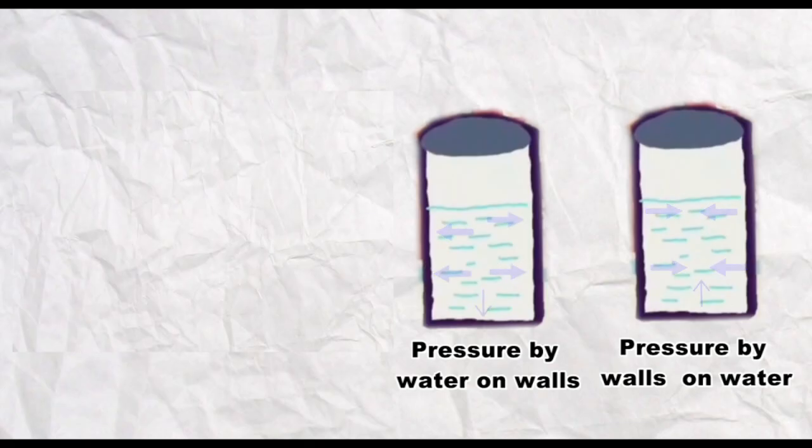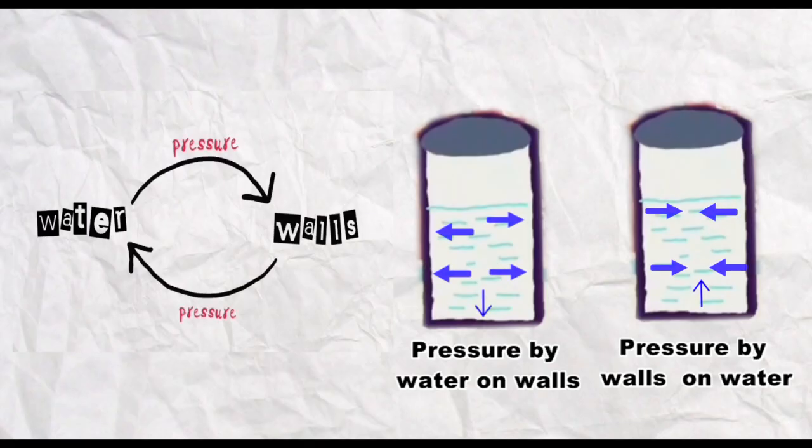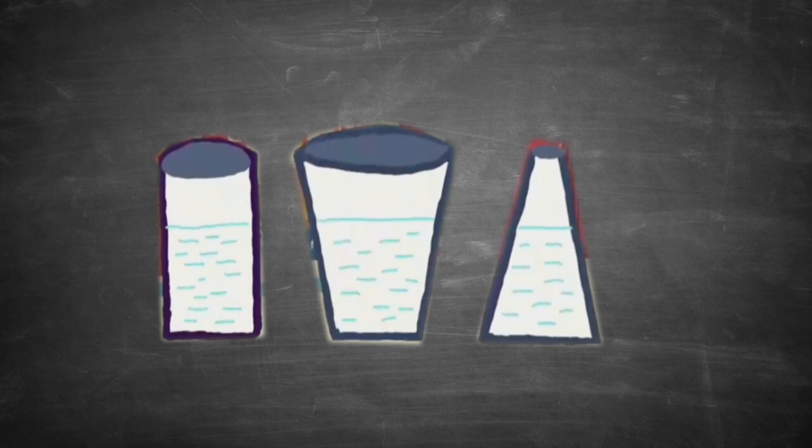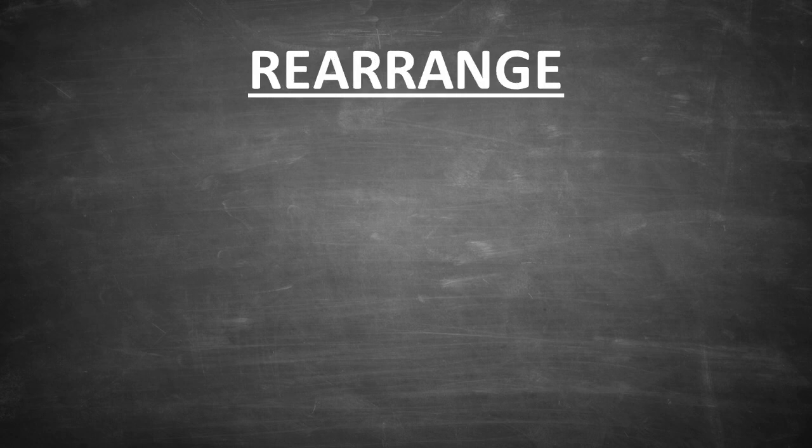Since the flasks are stationary, there must be a force balancing the pressure, and that is the force that the walls of the flask exert on the water. We figured out that the pressure is the same in all three flasks, given by P.